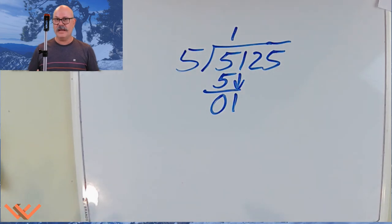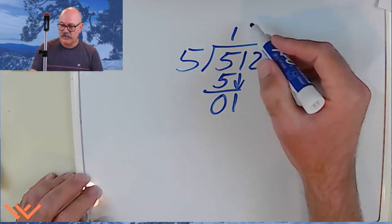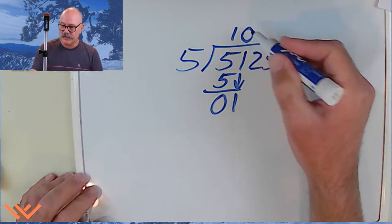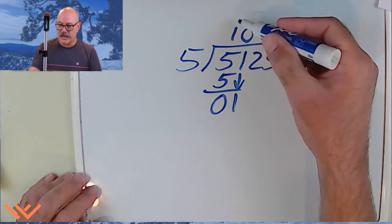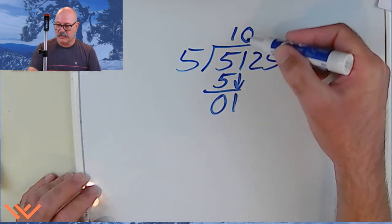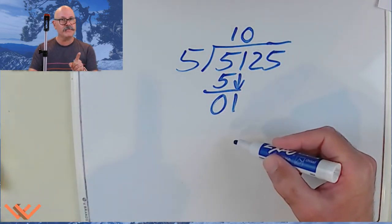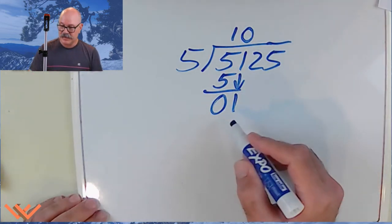And I bring down that one. Hmm. Is one divided by five? I'm not able to do that. So I have to come up here and put a zero. One thing to note. Notice how I'm keeping all of my numbers in their columns. Just remember that.